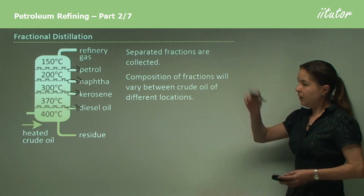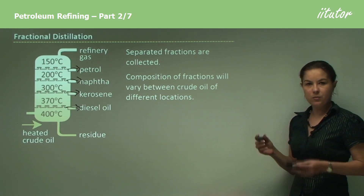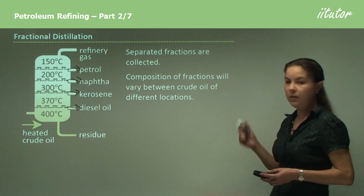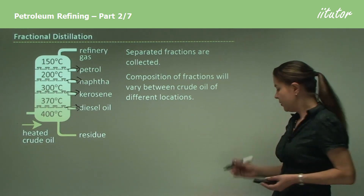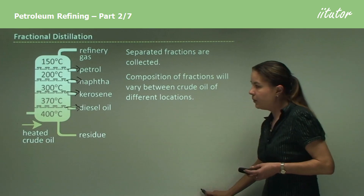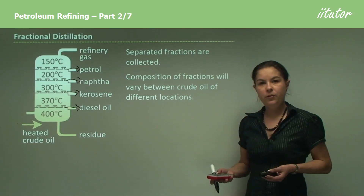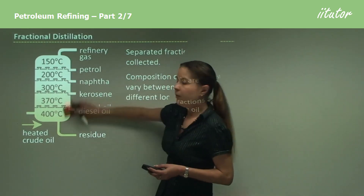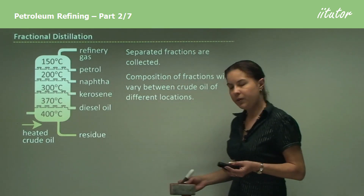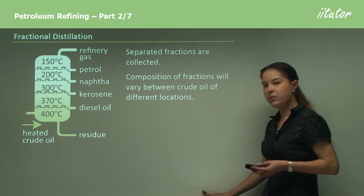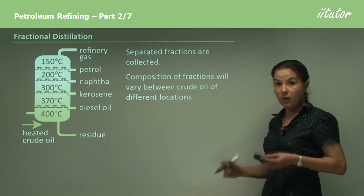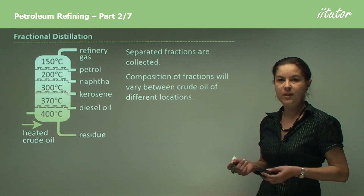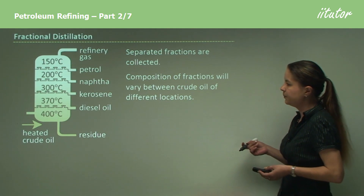Around the world, the composition of the fractions will vary depending on where the crude oil is mined. For example, if the crude oil was mined in North Queensland in Australia, it would have a very different composition to crude oil mined overseas, for example in the Gulf of Mexico in the United States.